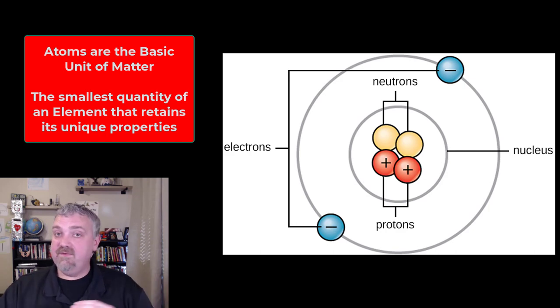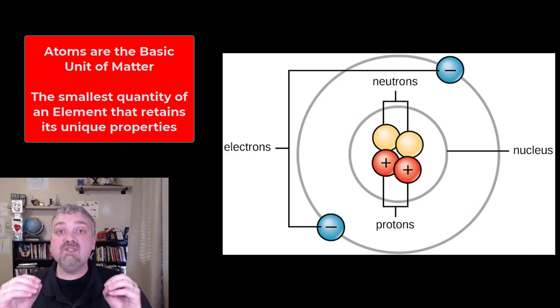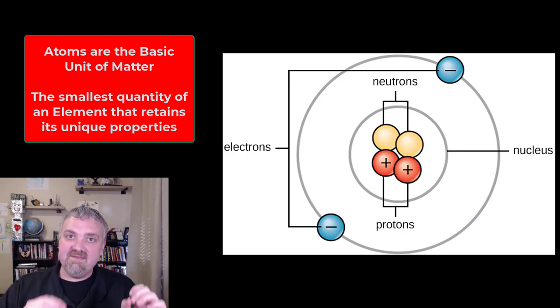These atoms form together to form every chemical that we have. How these atoms behave determine which chemical reactions occur and which chemicals we have in our physical living world. The textbook definition of an atom would be the smallest quantity of an element that retains the unique properties of that element.